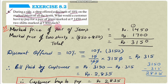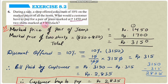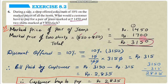Solution: Market price of pair of jeans = 1450 rupees. Market price of 2 shirts = 850 + 850 = 1700 rupees. Total MRP = 1450 + 1700 = 3150 rupees.